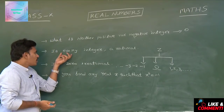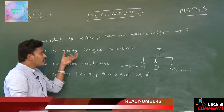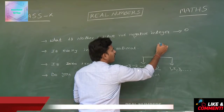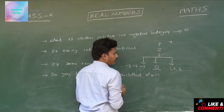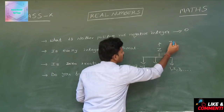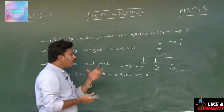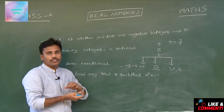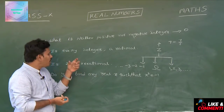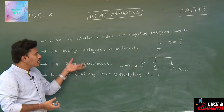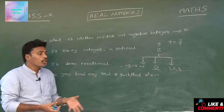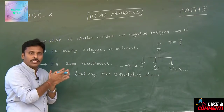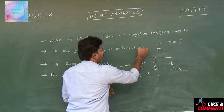For the second question — is every integer a rational? Take any integer, for example 7. We can write 7 as 7 by 1. It is of the form P by Q where P and Q are integers and Q is non-zero. Since every integer can be expressed in the form of a rational number, we conclude that every integer is a rational. The answer is yes.